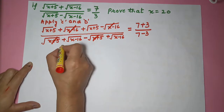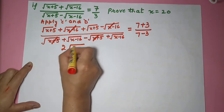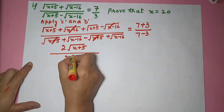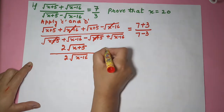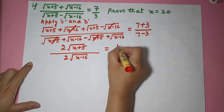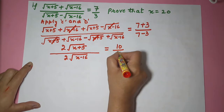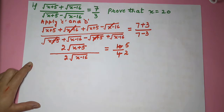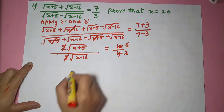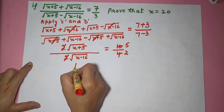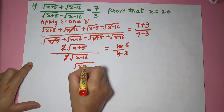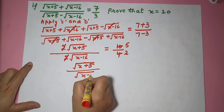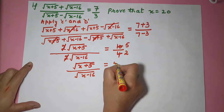After cancellation, I am left with 2 under root of x plus 5 divided by 2 under root of x minus 16, equal to 7 plus 3 is 10, and 7 minus 3 is 4. You can simplify this as 5 by 2. The 2s cancel, leaving under root of x plus 5 divided by under root of x minus 16 equal to 5 by 2.